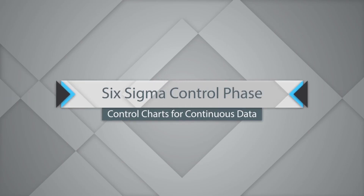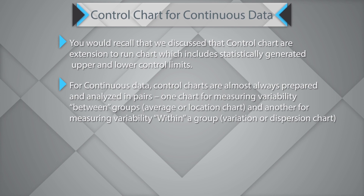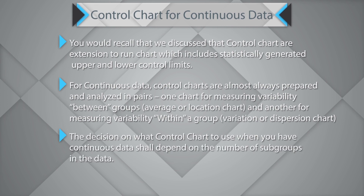The next topic is Control Charts for Continuous Data. Control charts are extensions to run charts which include statistically generated upper and lower control limits. For continuous data, control charts are almost always prepared and analyzed in pairs — one chart for measuring variability between the group based on the average (the location chart), and another for measuring variability within the group through the variation or dispersion chart. The decision on which control chart to use depends on the number of subgroups in the data.